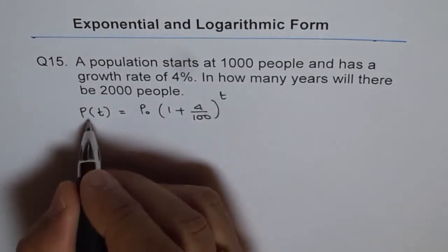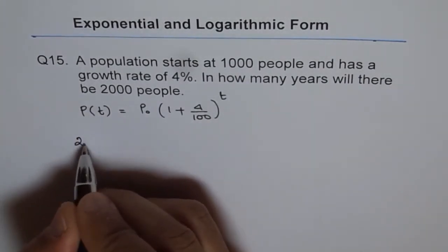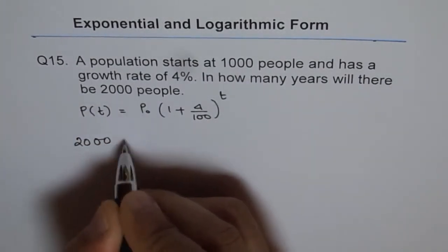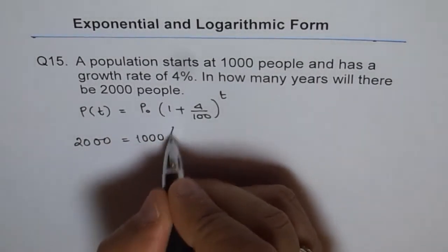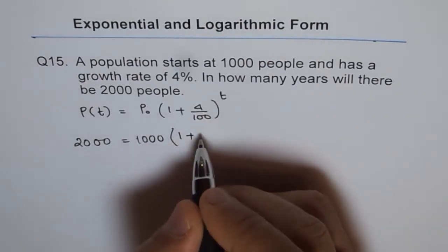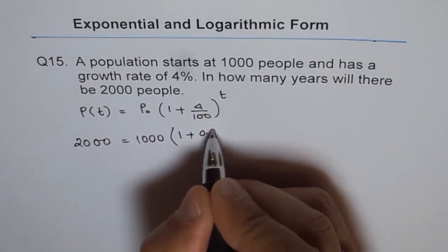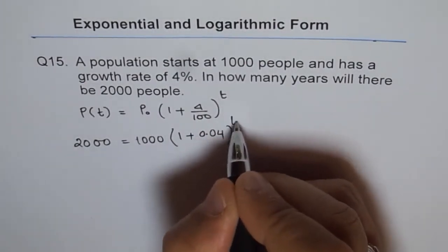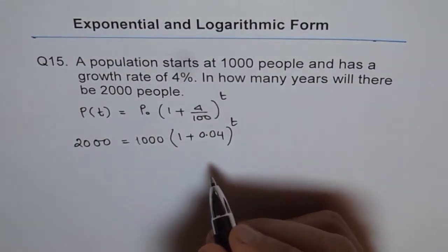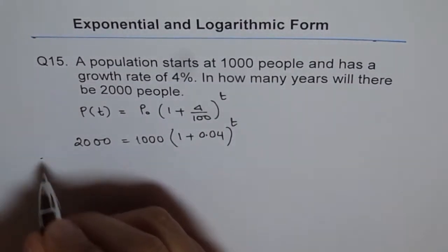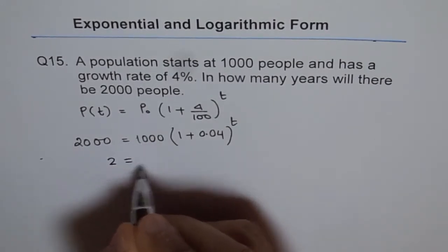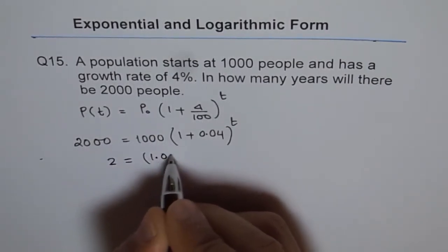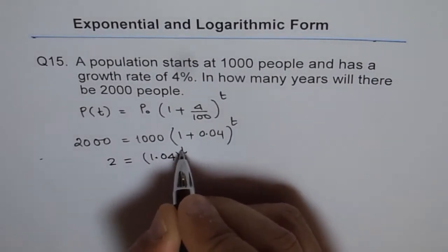So we got 2000 final population, and initial population 1000, times 1 plus 0.04 to the power of t. So that gives us 2000 divided by 1000 is 2 equals to 1.04 to the power of t.